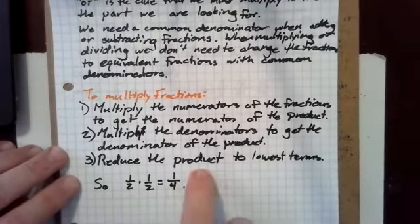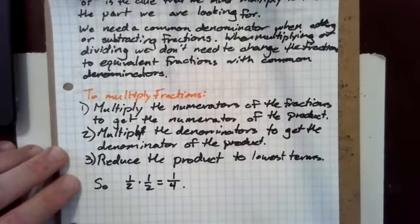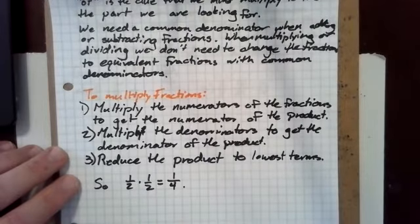We multiply the ones to get a one and the twos to get a four, and we can't reduce the fraction any more than that.